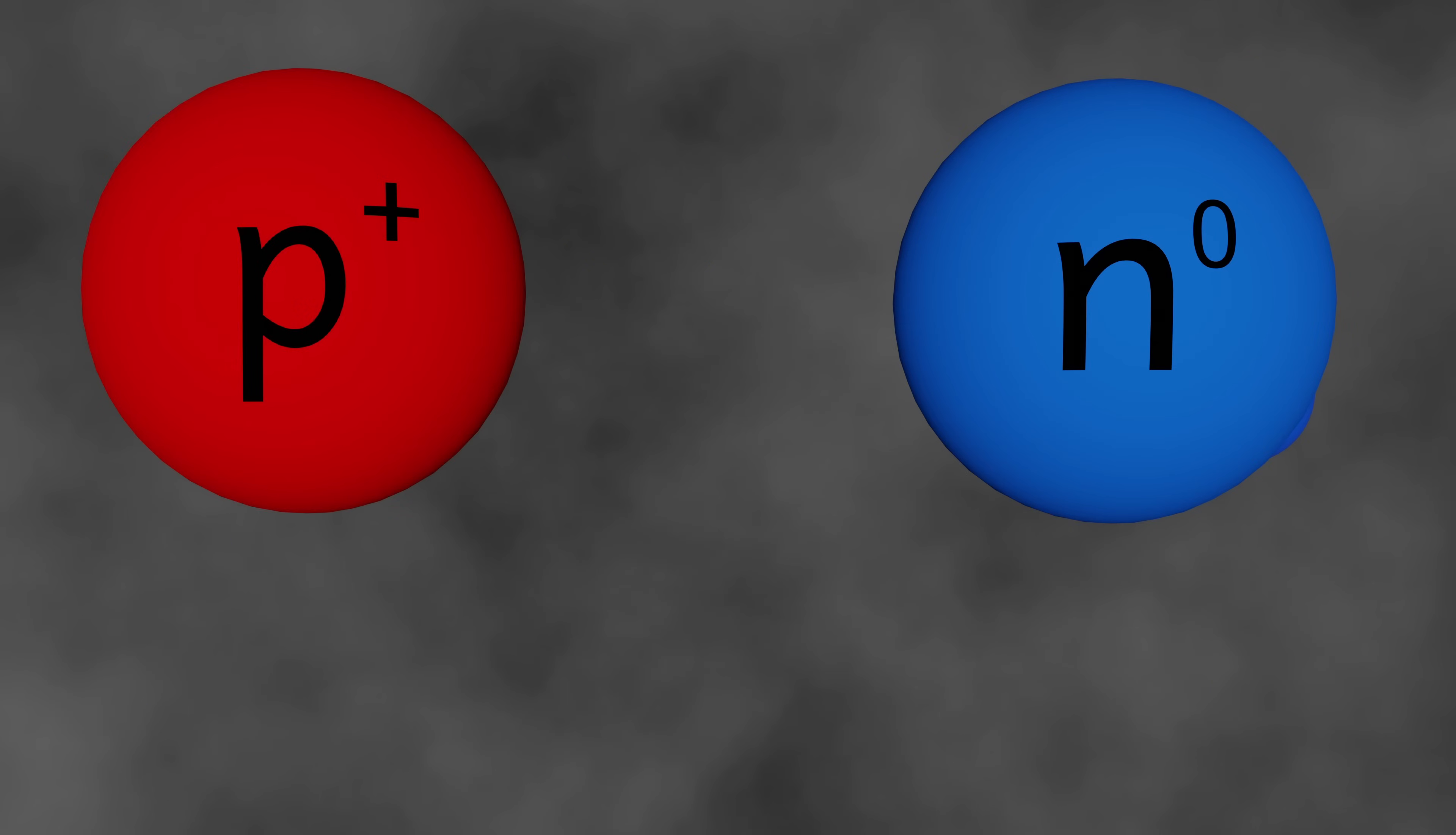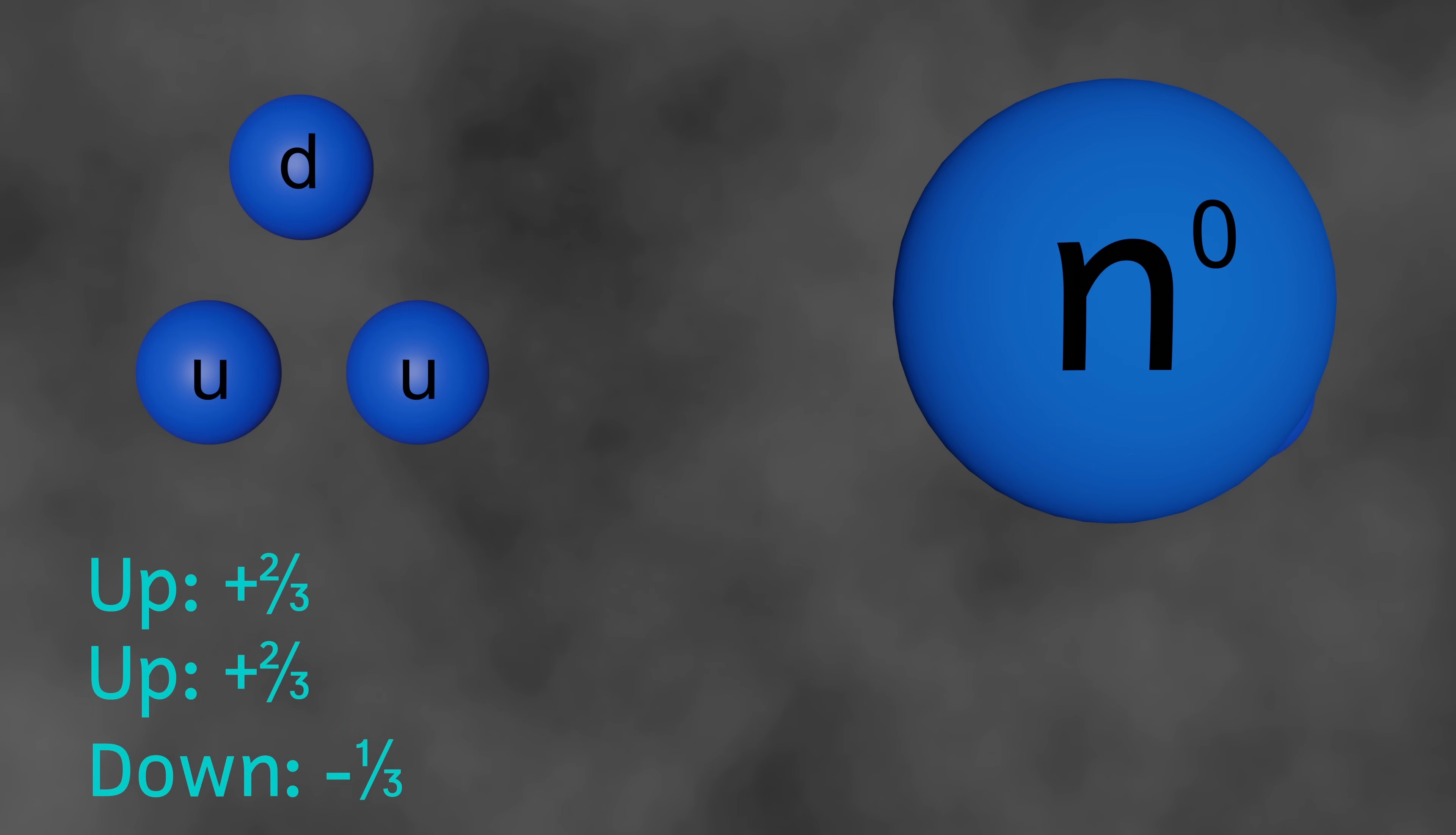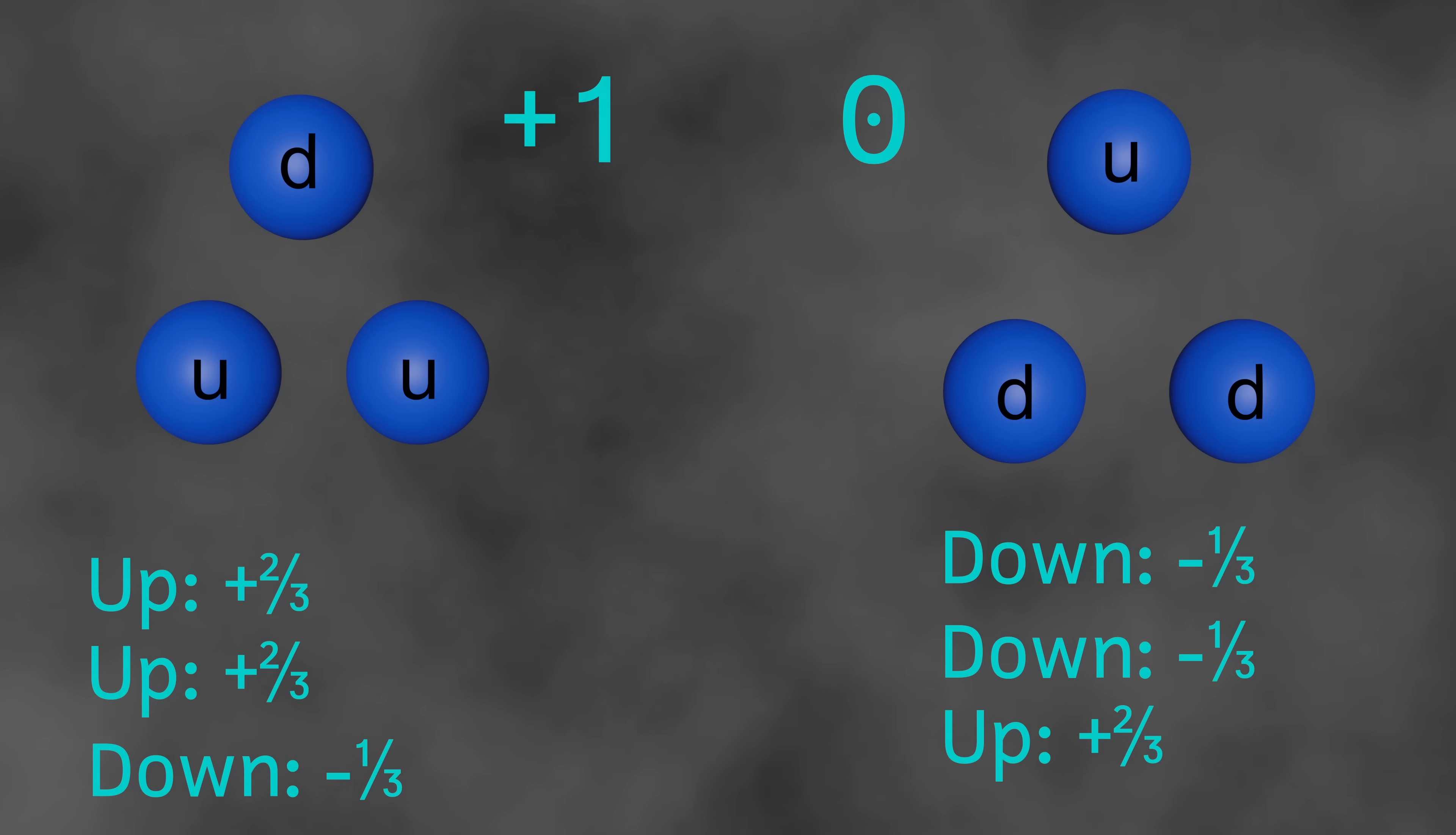The proton with a charge of plus one is made from two up quarks and one down quark. Adding up the electrical charges, we can see that it gives an overall charge of plus one. The neutron, on the other hand, which has no overall charge, is made from two down quarks and one up quark. Again, adding the electrical charges together, we can see that there's no overall electrical charge.